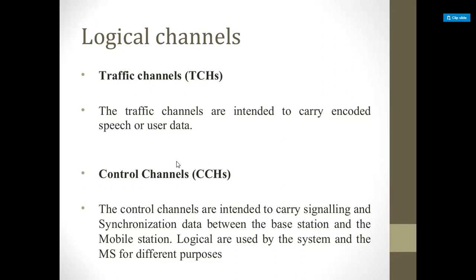For 9600 bps, the half rate data channel carries 11.4 kbps with digitized data at 9600 bps. For 4800 bps, the digitized data is 4800 bps and the channel carries 11.4 kbps. For 2400 bps, the data channel carries 11.4 kbps with digitized data at 2400 bps. These full and half rate channels carry digitally encoded user data or speech, with identical formats on both forward and reverse link.